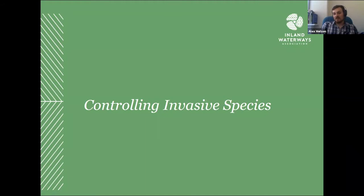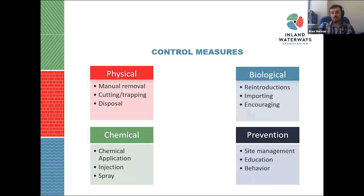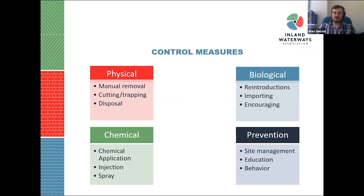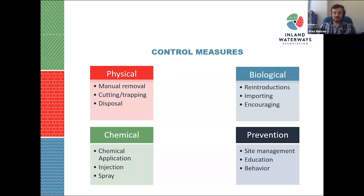There are four primary control measures for managing invasive species. First, physical removal — using manual labour, machines, cutting, or trapping, often involving volunteers or professionals. Second, chemical control methods — applying herbicides, injecting species, and spraying along edges to reduce the vigour of the species.